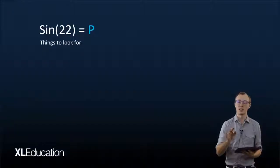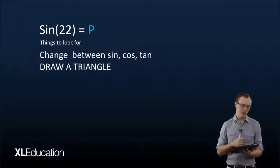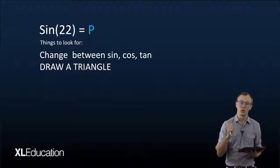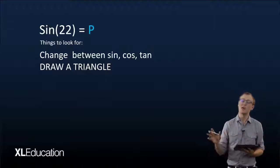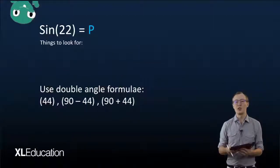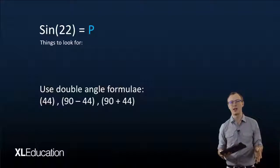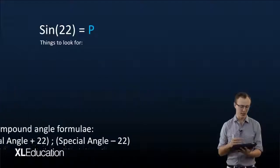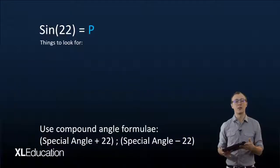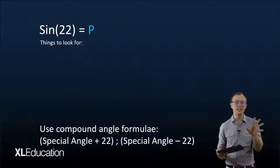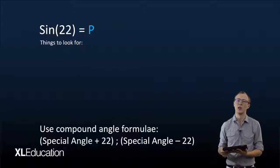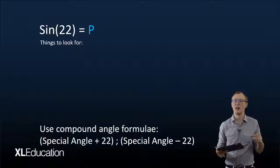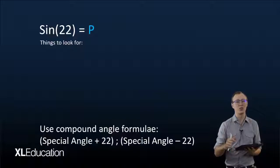For our second type of problem, we have sine of 22 equals P. To answer questions involving sin(22°), cos(22°), and tan(22°), we draw a triangle and read many answers off it. We can also use double angle formulae — wherever you see 44° or something like 90 minus 44, that's where double angle formulae come in. We can also use compound angle formulae, usually in the form of a special angle (30, 45, or 60) plus or minus 22°. For example, 52 is 30 plus 22, or 8 is 30 minus 22 — play around with your special angles and the given angle.